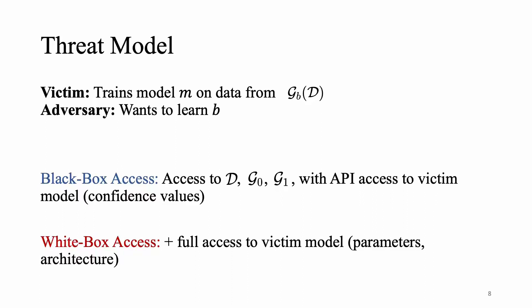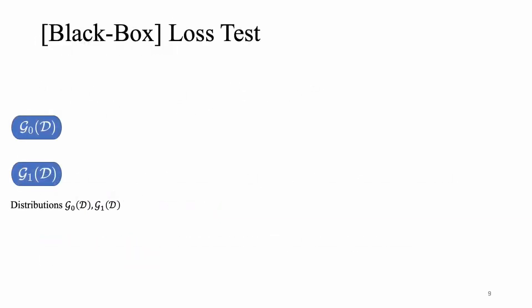Now I'll describe one of the black box attacks that we propose in our work. This is a very straightforward test which we call the loss test. And the way this works is the adversary starts with these two distributions which it has public access to and it samples some data from both of these distributions. And then let's say it has a given victim model.